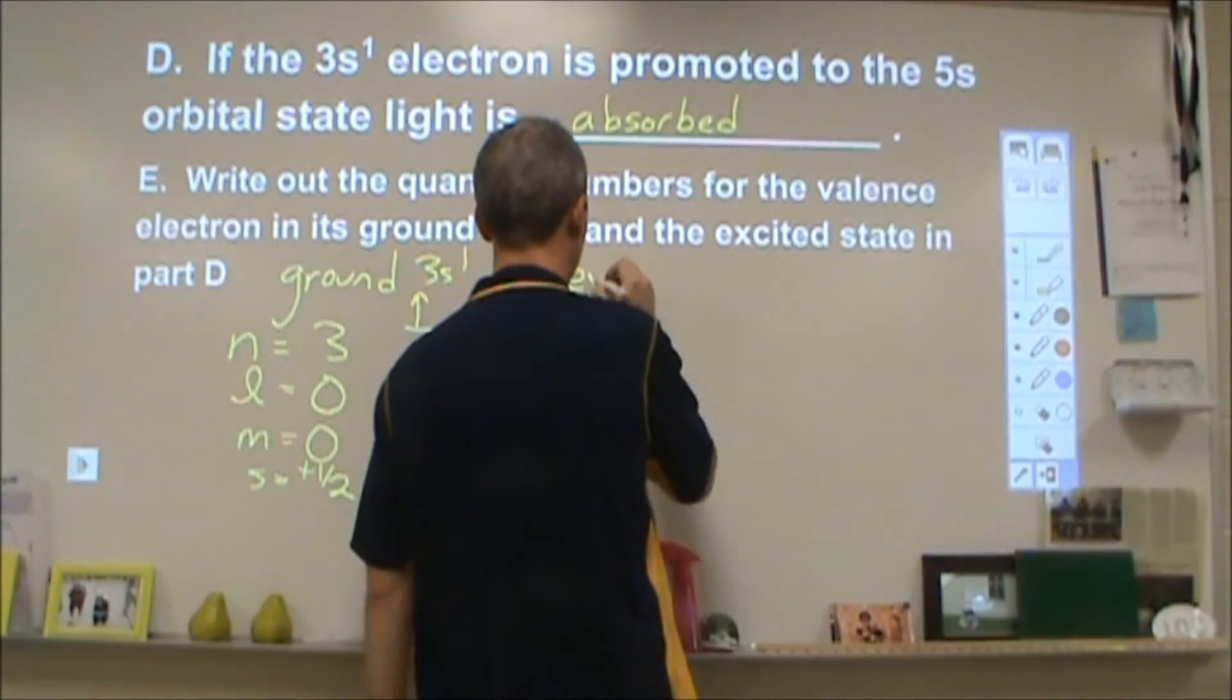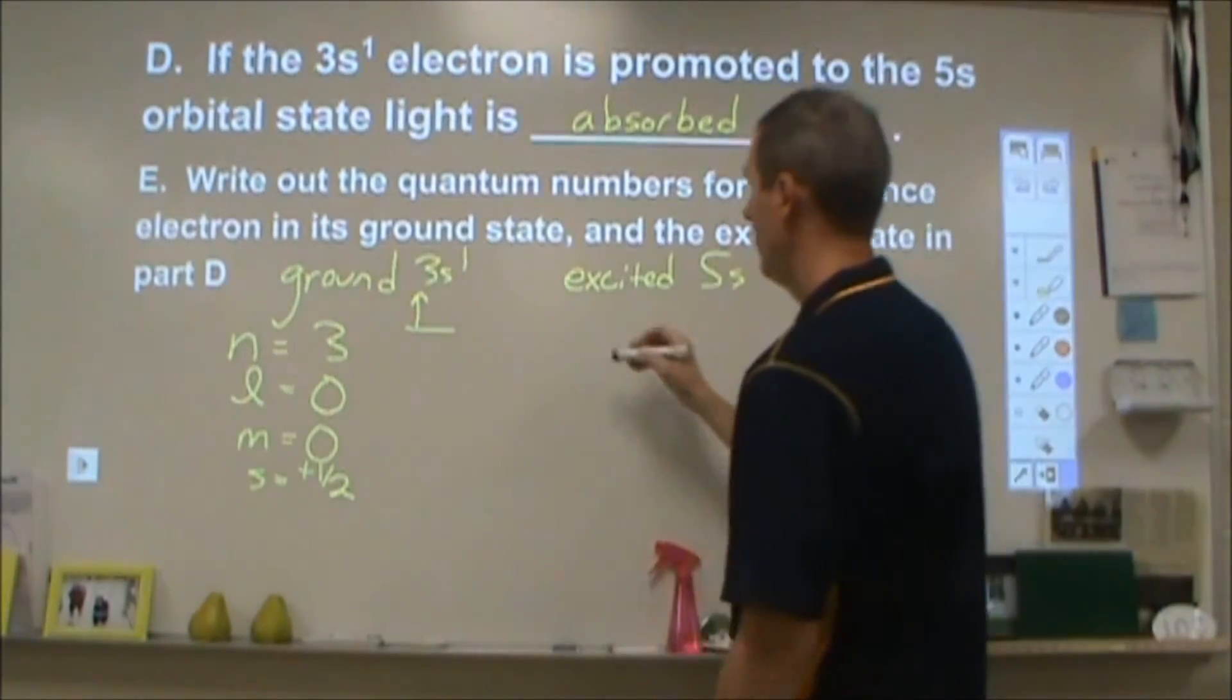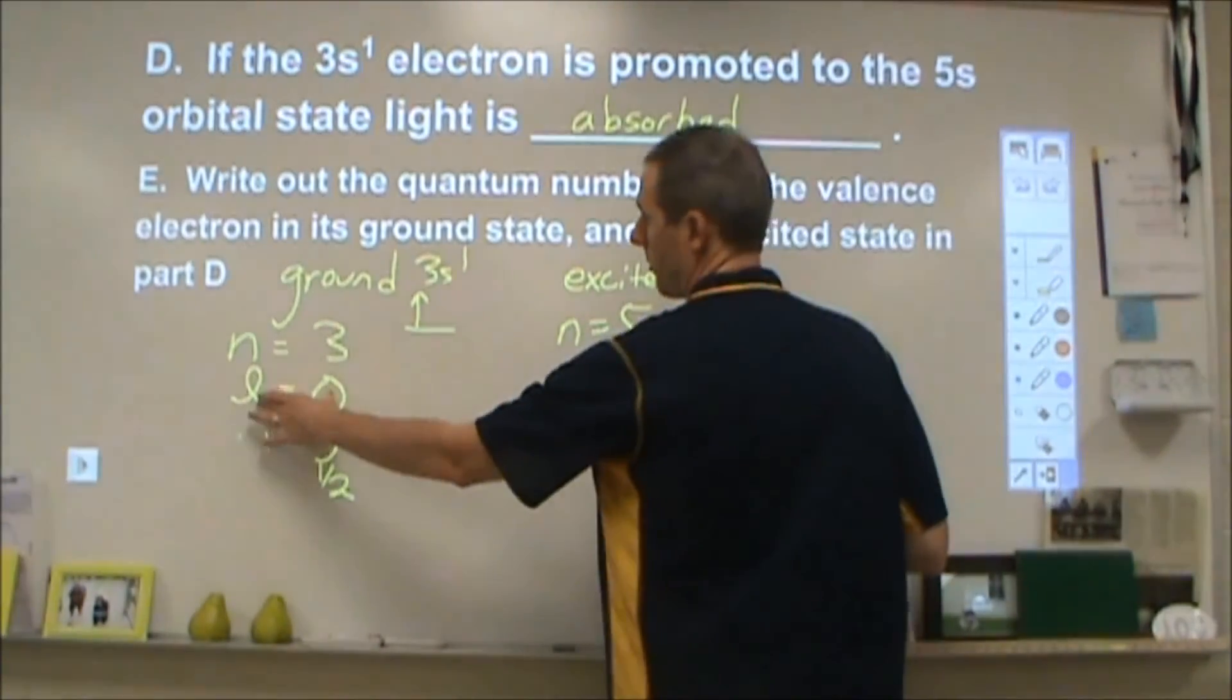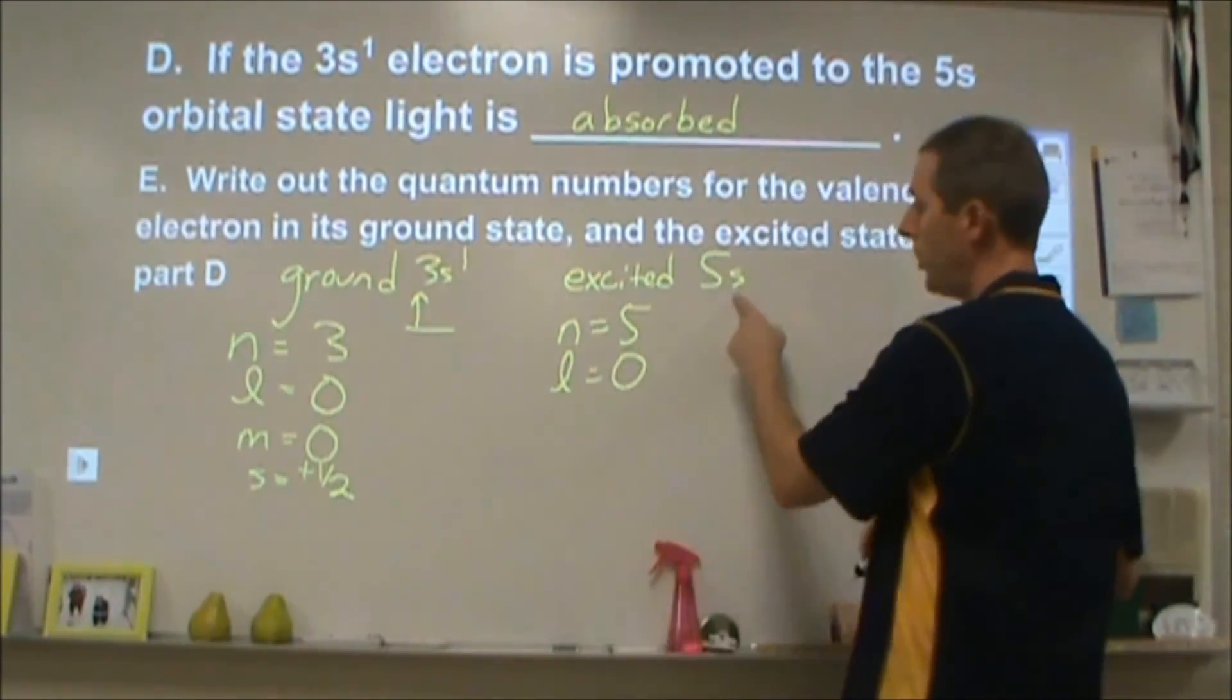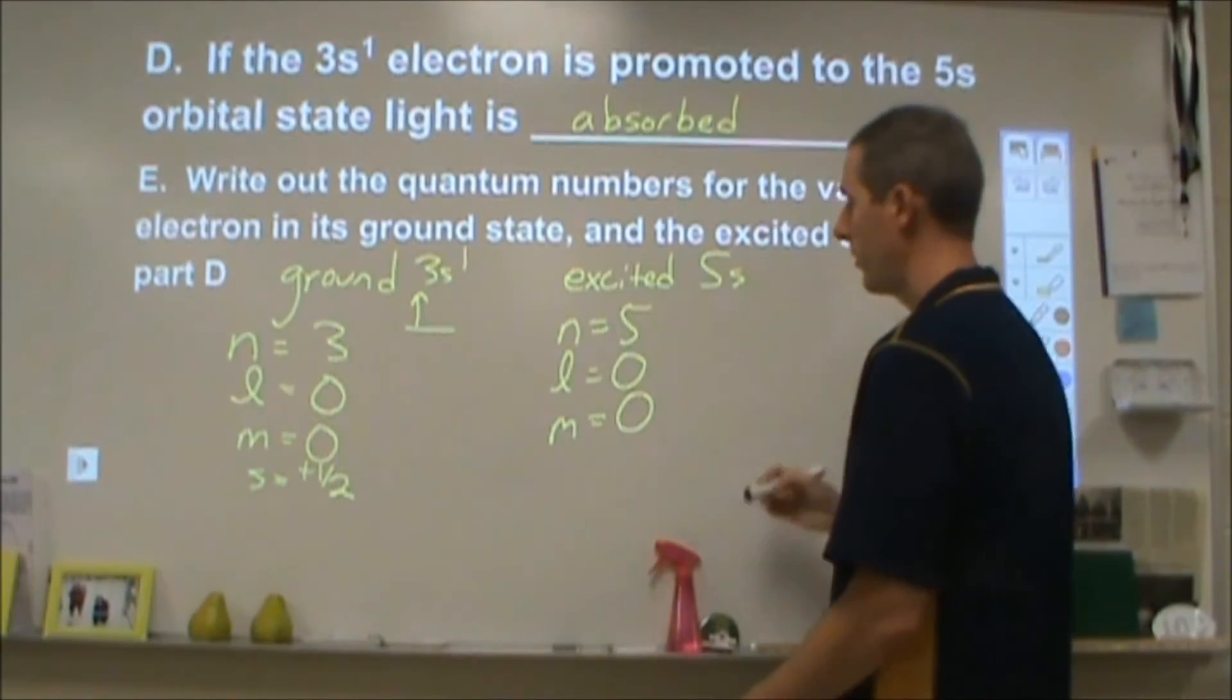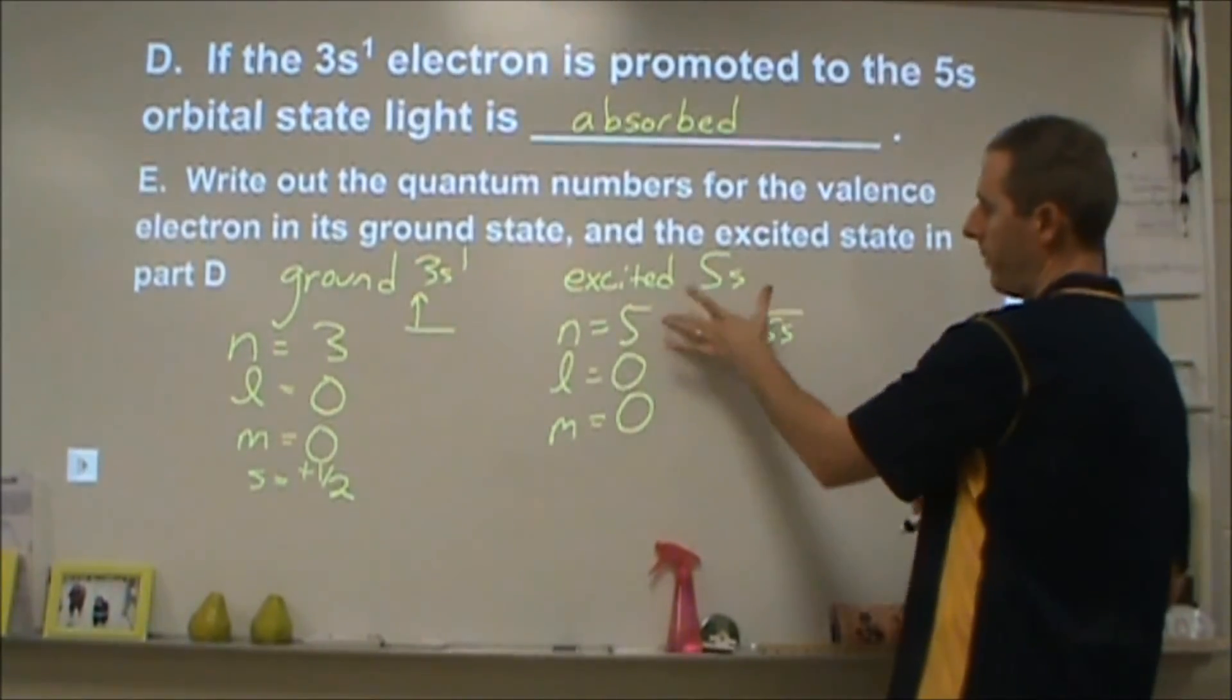In our excited state, now we're going to go up into a 5s orbital. So for our n, we're changing from n equals 3 to n equals 5. Our energy level has changed. For our angular quantum number, we're still in an s orbital, so our l would still be 0. If we moved to a p orbital, our l would be 1, and so on. And being in an s orbital, our m value is still going to be 0 because there's only one s orbital in the 5th energy level. Our m's start at 0 and move out from there.